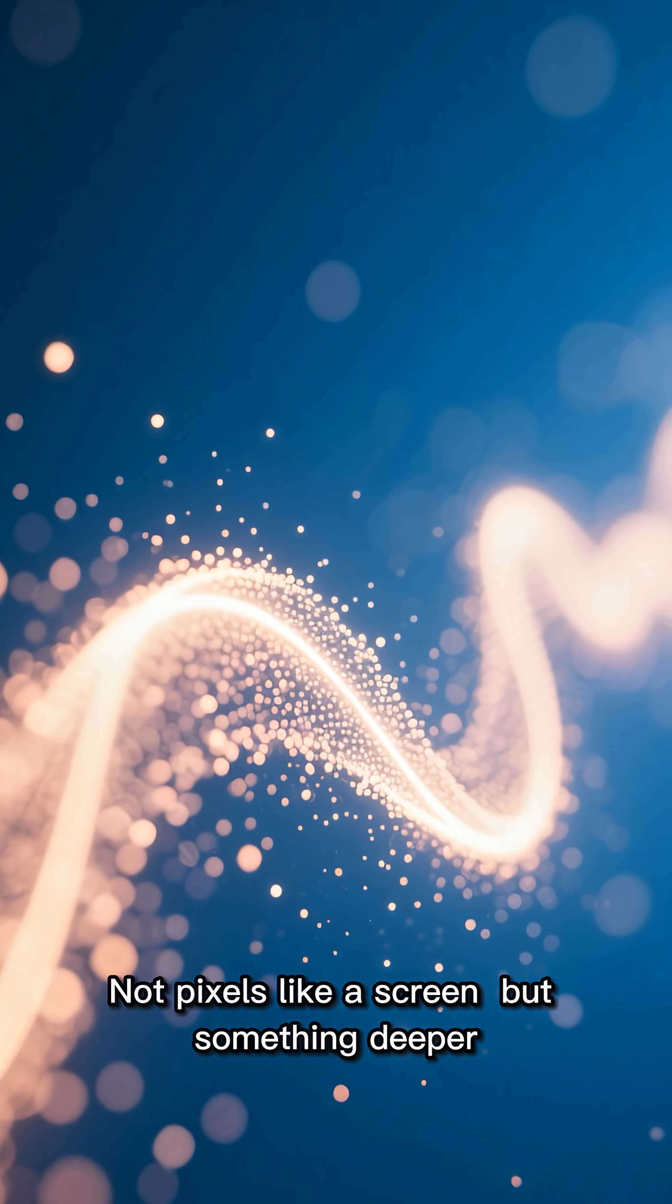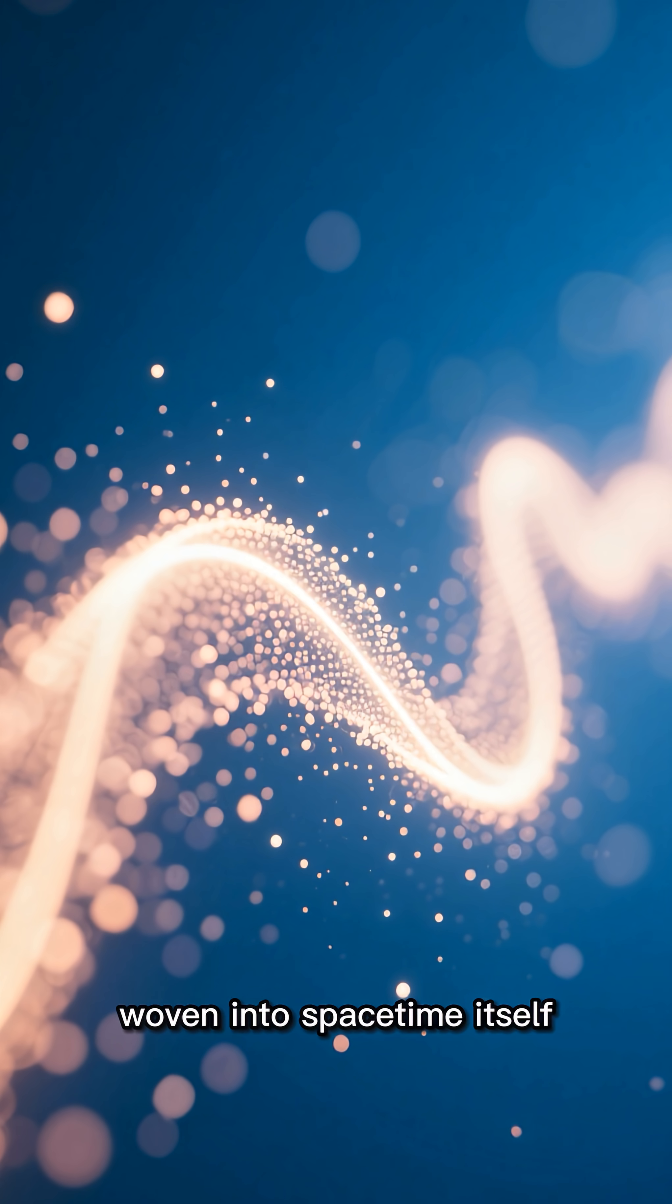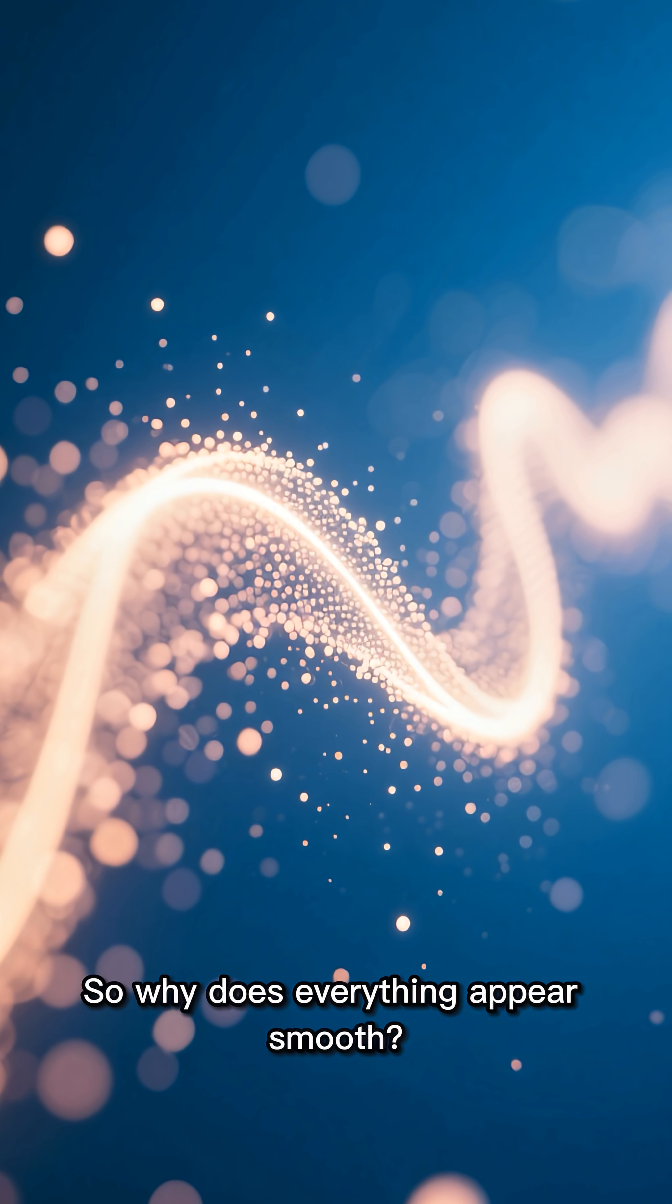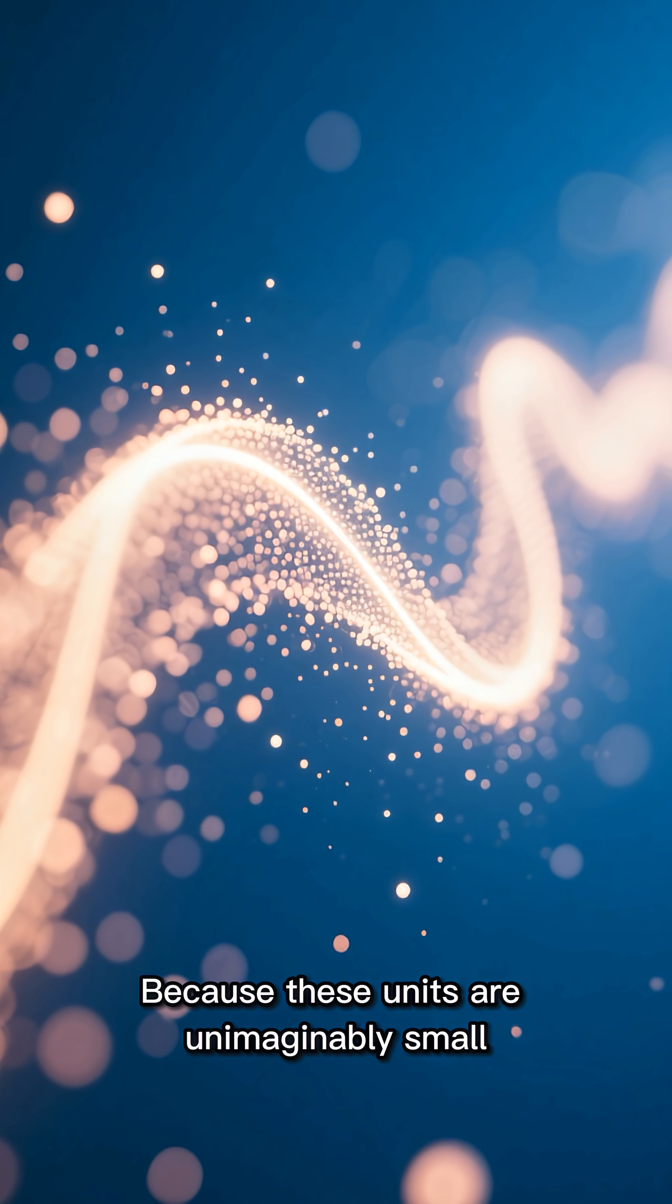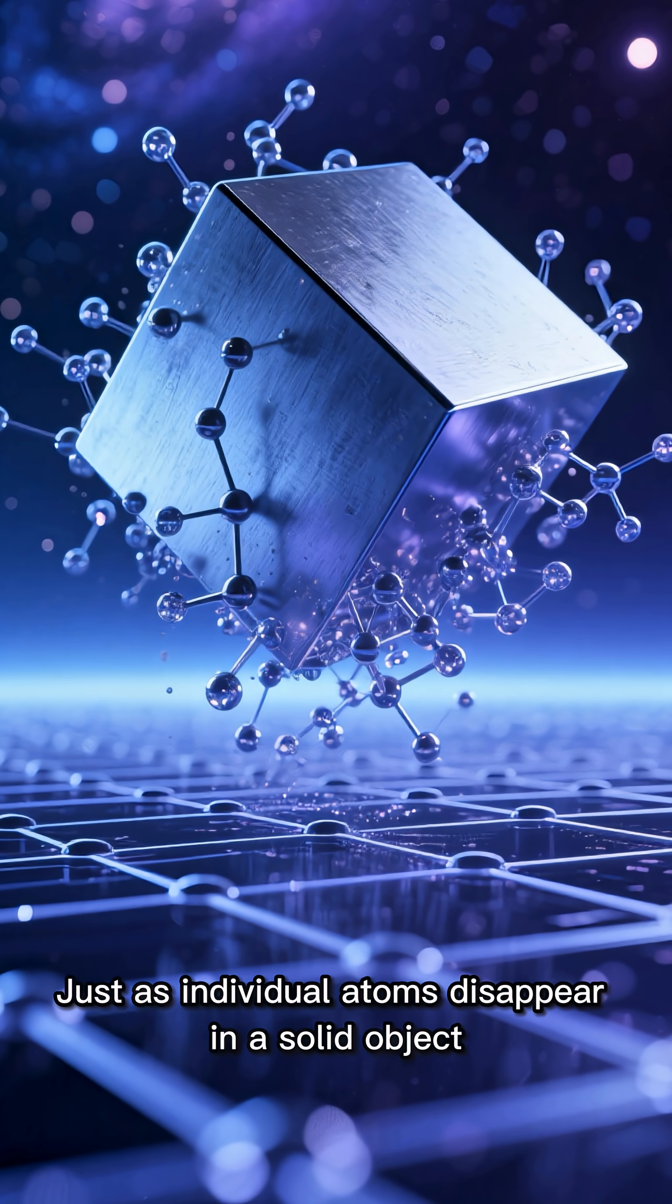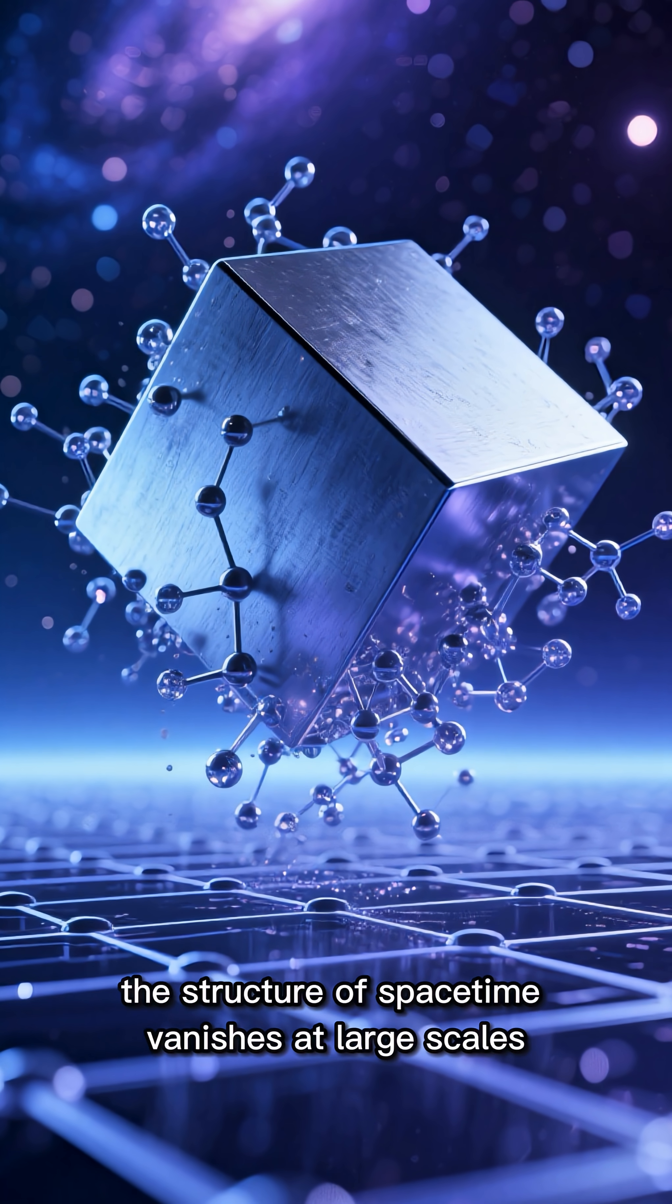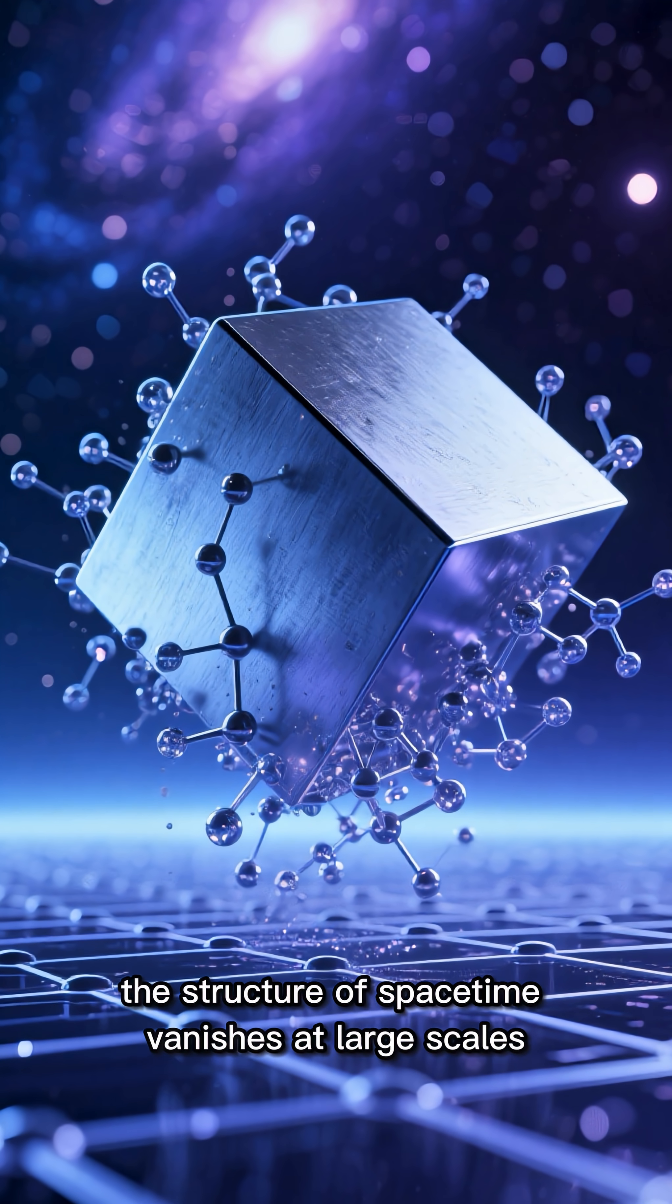Not pixels like a screen, but something deeper, woven into space-time itself. So why does everything appear smooth? Because these units are unimaginably small. Just as individual atoms disappear in a solid object, the structure of space-time vanishes at large scales.